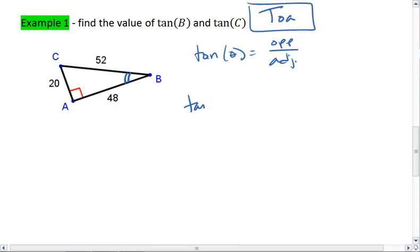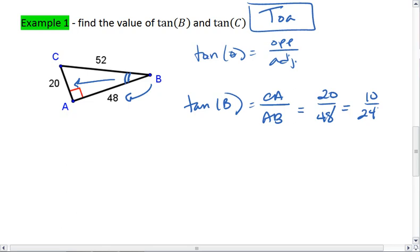If I'm looking at tangent B, the opposite leg is CA. The adjacent leg is AB. Since CA is 20, we get 20 over 48.